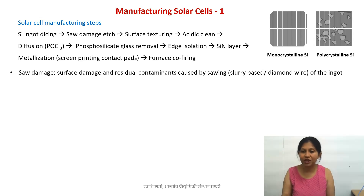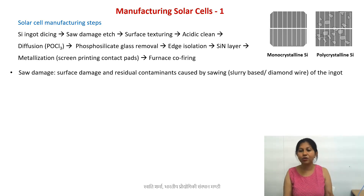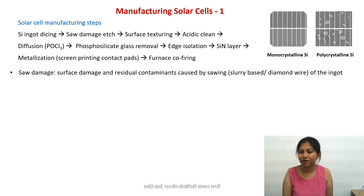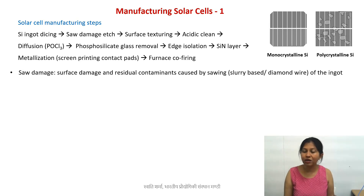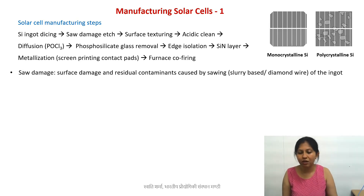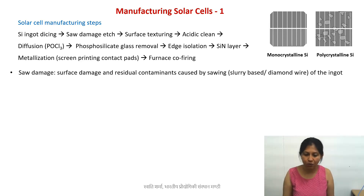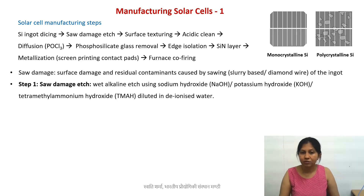There are different types of etching processes: dry etching and wet etching. Dry etching uses, for example, high-energy plasma such as oxygen plasma to remove surface material. Wet etching uses wet chemicals. For silicon solar cell manufacturing, we predominantly use wet — chemical-based — processes.